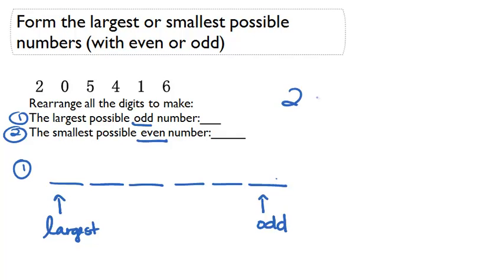So let's look at our digits: two, zero, five, four, one, six. Our largest number is six. Let's put our smallest odd number here, which would be one.